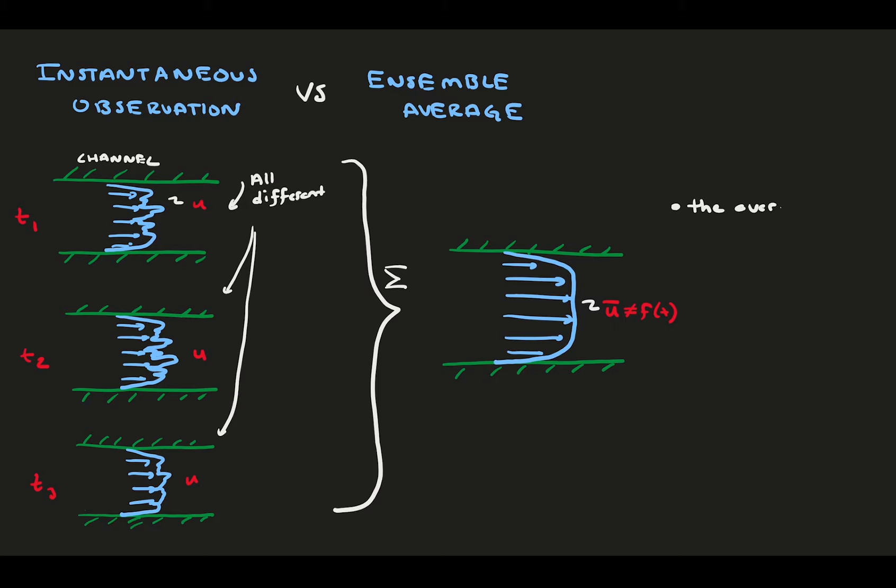In turbulent channel flow, like we have here, the time average velocity profile of many observations would look smooth and reasonable. Though, what's important to keep in mind is that this average flow never physically exists. At no single point in time will the flow ever look like this in turbulent flow. Averages only exist in the statistical sense. This average profile is just saying that statistically speaking, at any given height location, the velocity is most likely to be this value.